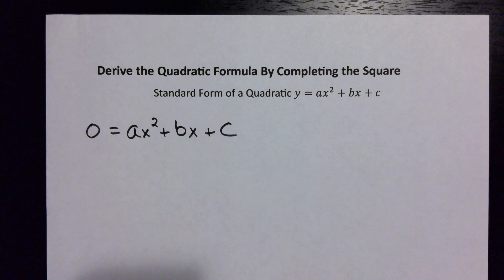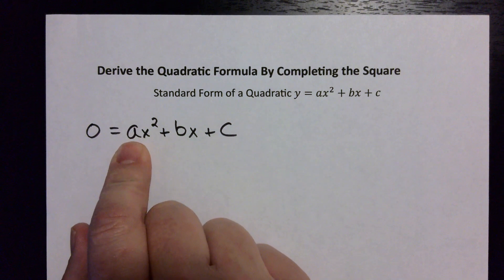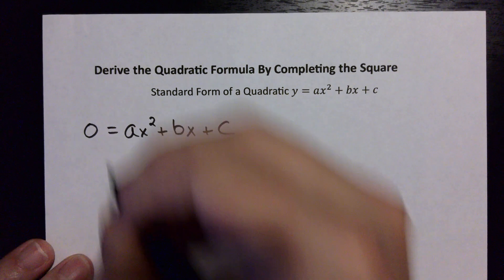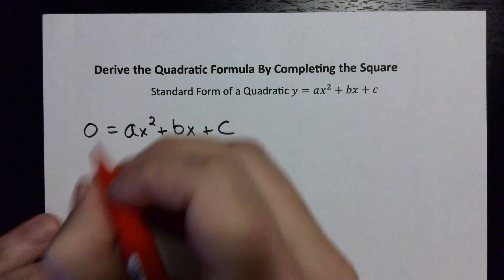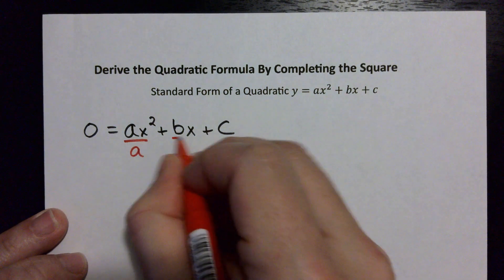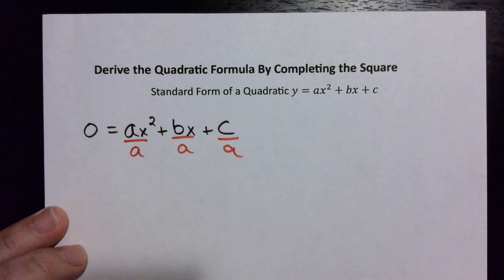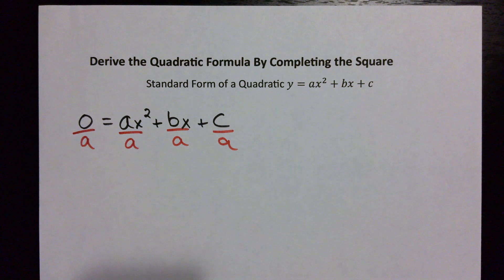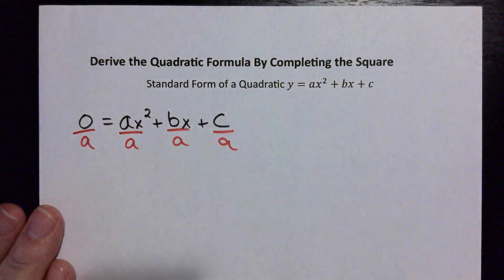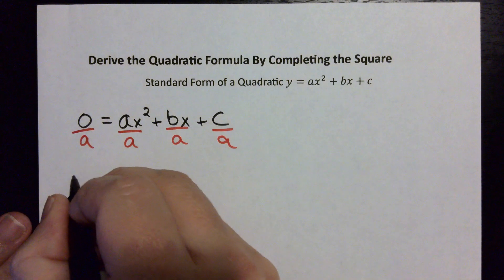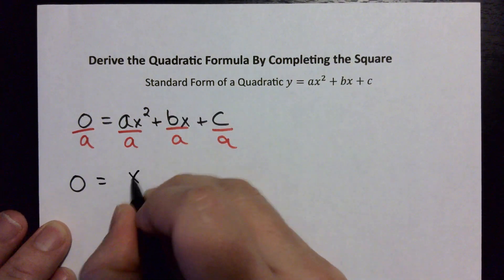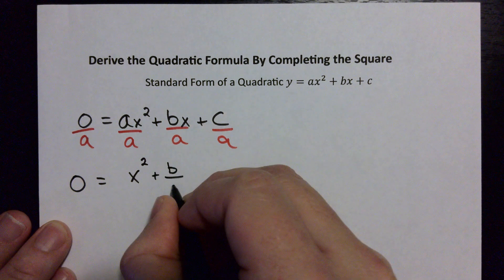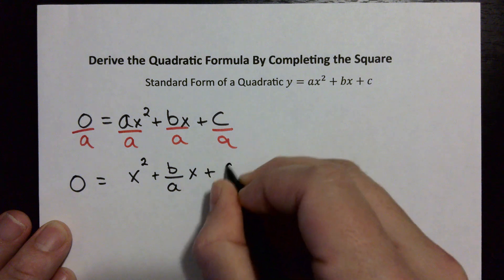The first thing we need to do is make sure that the coefficient in front of x² — if it's anything other than one, and we don't know what it is — we have to divide everything by that number. So we'll go ahead and divide everything by a. We'll assume it's a number other than one, but even if it's not, dividing by one wouldn't matter. Zero divided by anything other than zero is zero, so that stays the same. The first term turns into x², which is what you want for completing the square, and then we have plus (b/a)x, plus c/a.